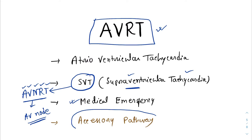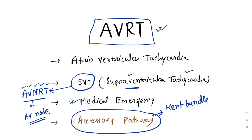If we talk about the accessory pathway, we can remember the Kent bundle. This is the name of the accessory pathway which is present in WPW syndrome. We have already discussed WPW syndrome and the ECG changes in cases of accessory pathway or WPW syndrome. In this class, we are going to see how an accessory pathway can result in reentrant tachycardia.